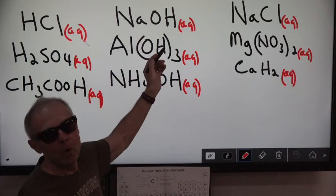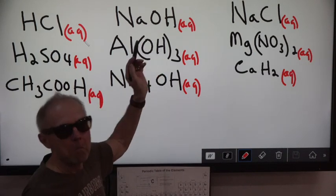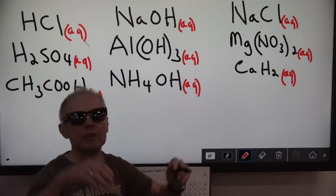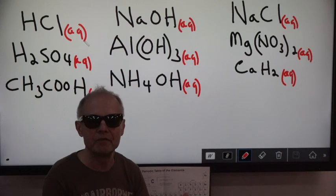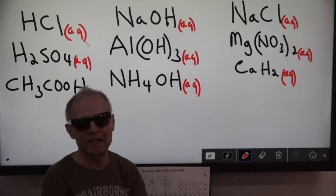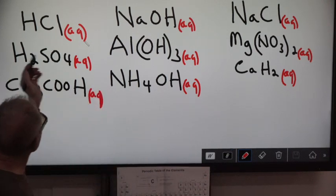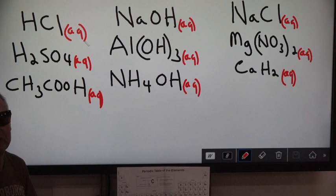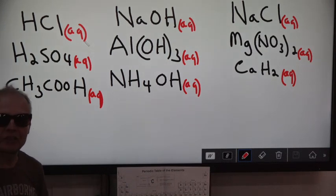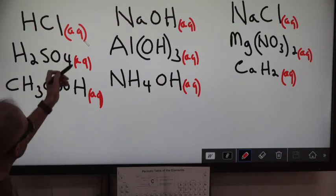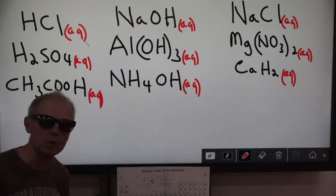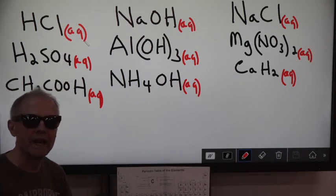Ionic compound put in water — most break up into the metal ion and the hydroxide ion, giving you a base and electrolytes. For acids: how do you tell if you've got an acid? You've got an H in front hooked to something else, and it has to be in water. An acid isn't an acid until you put it in water.